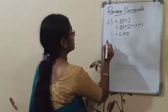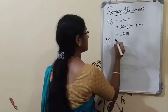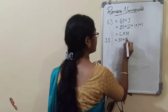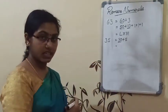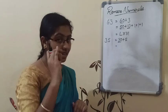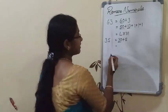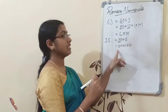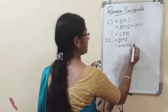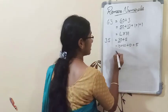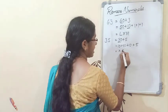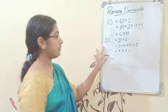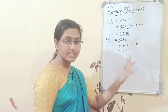One more example: write 35 in Roman numerals. 35 means 30 plus 5. We don't have 30 directly, but three repetitions are allowed. So 30 equals ten plus ten plus ten, which is XXX. Then 5 is V. Therefore, 35 equals XXXV.